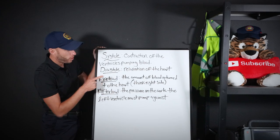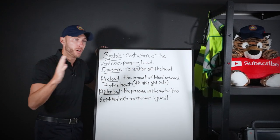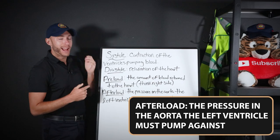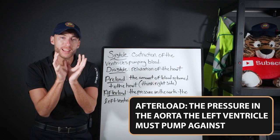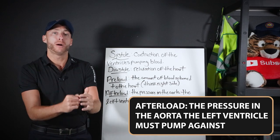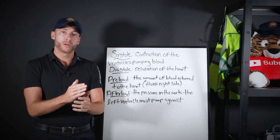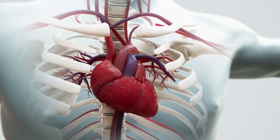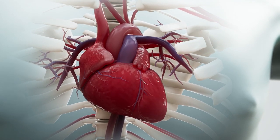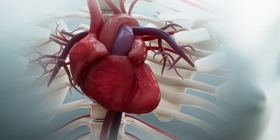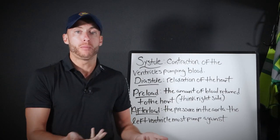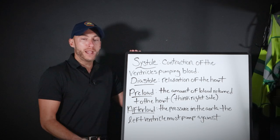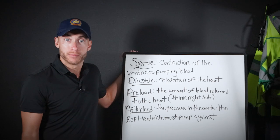Preload is the amount of blood returned to the heart. Remember, it's the right side of the heart where the preload action is, because that's where blood returns. Afterload is defined as the pressure in the aorta that the left ventricle must pump against to move blood forward. If the left ventricle is too weak to push blood forward into the aorta, blood backs up. On the preload side, if we don't have enough blood returning to the heart, we have a problem.